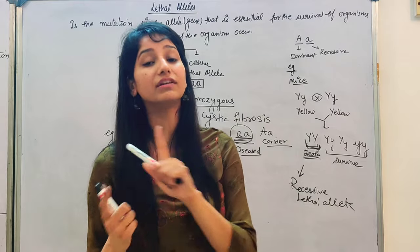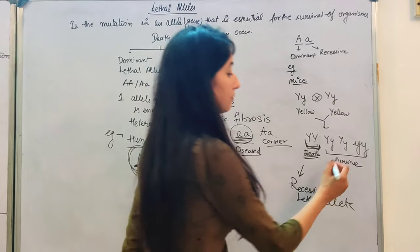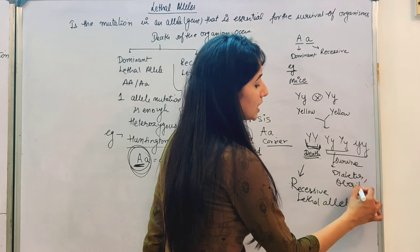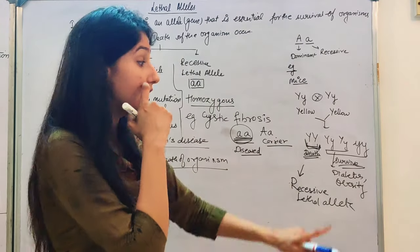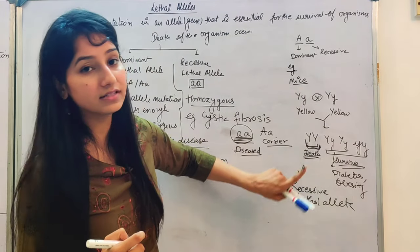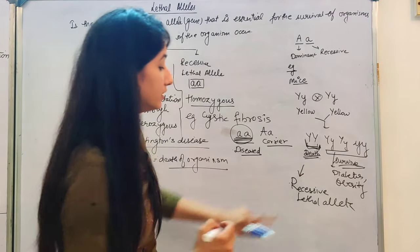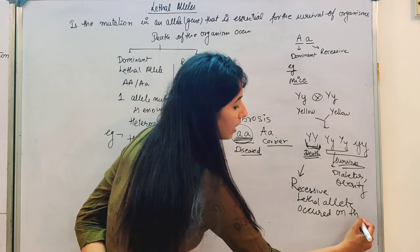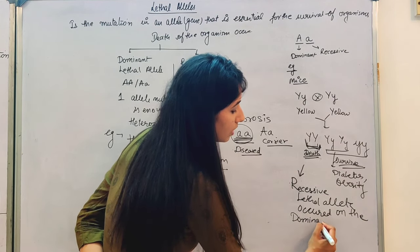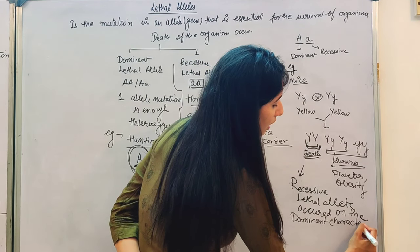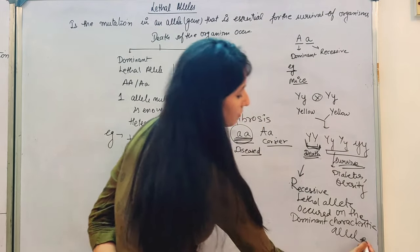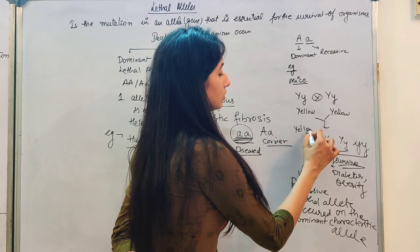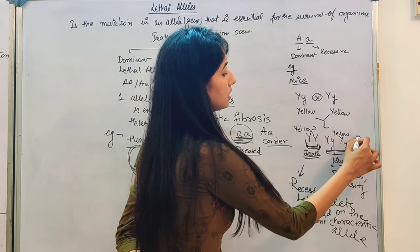It is a dominant allele for the characteristic of coat color, but for the lethal effect it is a recessive lethal allele. It will cause death only when both the dominant characteristic alleles are mutated. If only one is mutated, the organism will not die — it may get diseases like diabetes or obesity, but it will survive. Only when both alleles are mutated in the homozygous condition will the organism die.